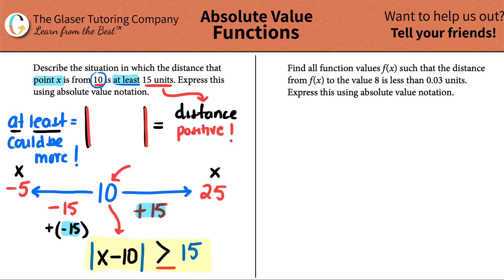Okay. Find all function values f of x such that the distance from f of x to the value of 8 is less than 0.03 units and express this using absolute value notation. Okay. So it's going to kind of be just like the setup for the last one that we did. Did they tell us a distance? Yes, they did.